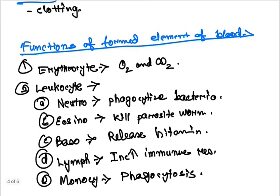Functions of formed elements in blood: Erythrocytes transport oxygen and carbon dioxide. Leukocytes, specifically neutrophils, phagocytose bacteria as their favorite site.